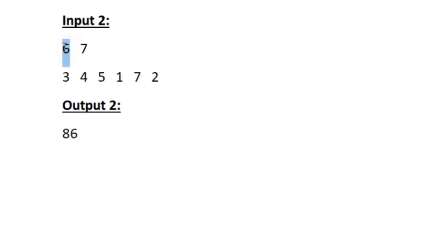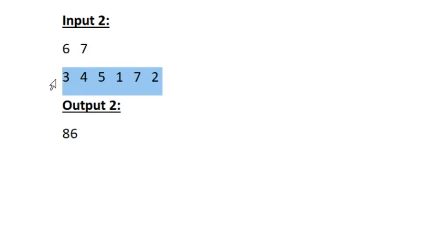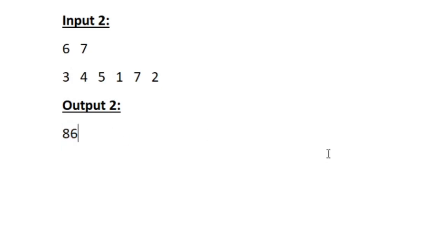Similarly we will also be solving sample input 2. Here n is equal to 6 and k is equal to 7. First we create a new string with 7 zeros, then using the n integers we toggle the bits. After toggling for every n integer we have our updated binary string, and we print its decimal equivalent as the output.